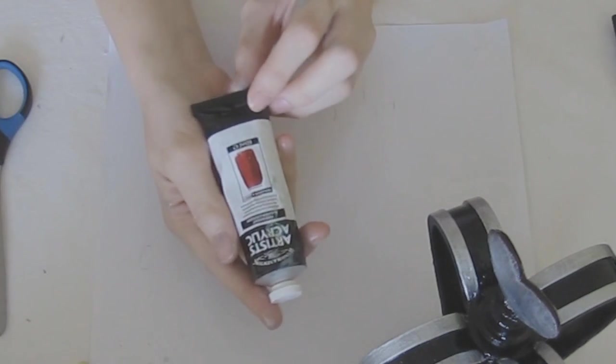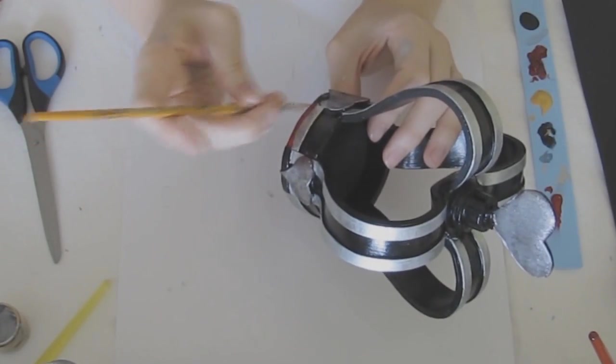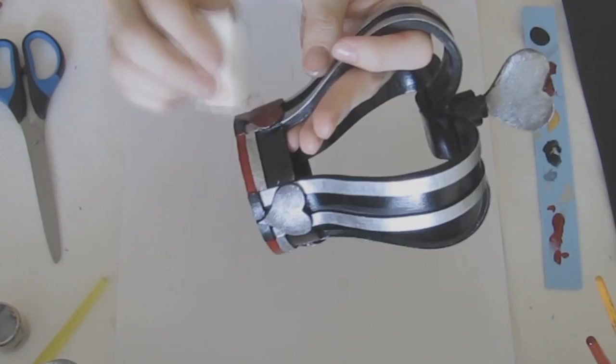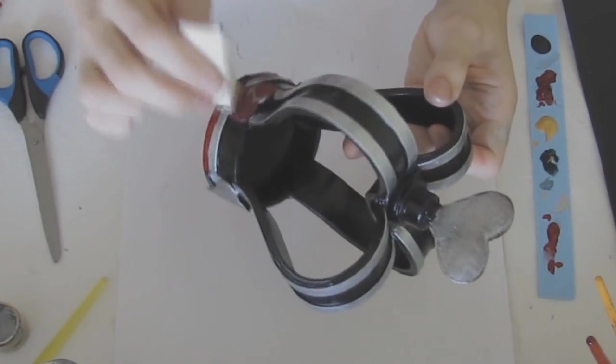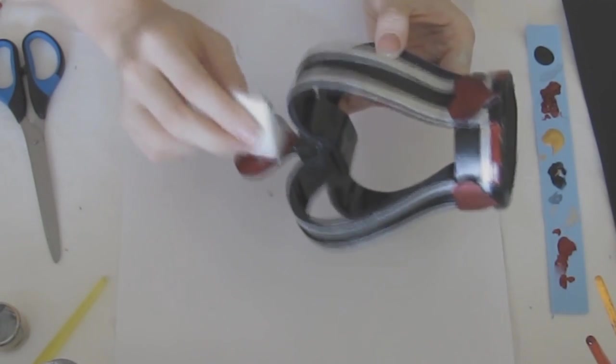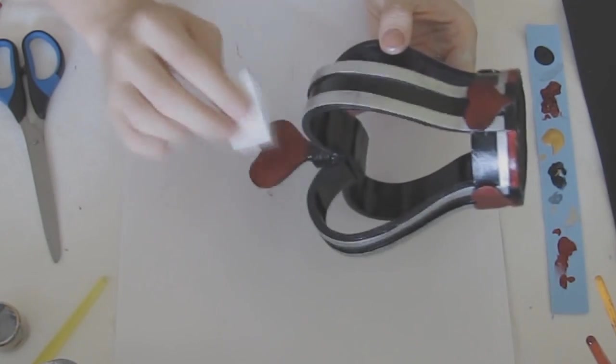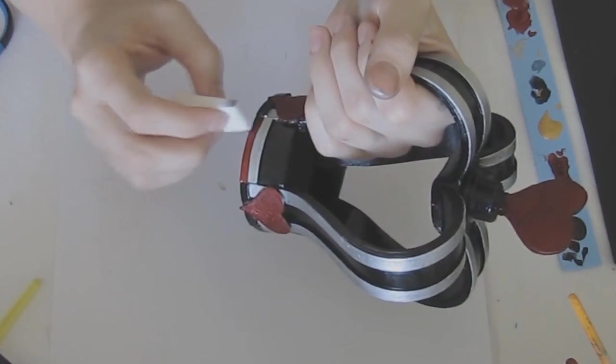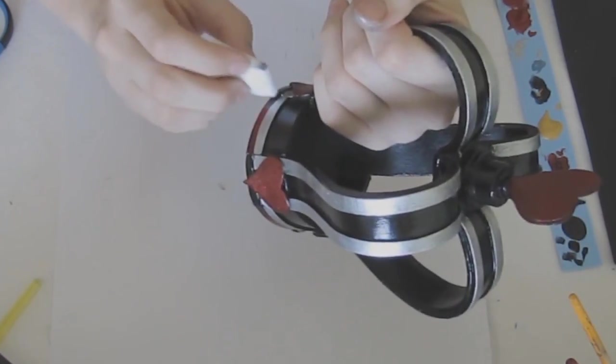I used a Winsor & Newton acrylic paint in Alizarian Crimson but you can use whatever red works for you. Using a makeup sponge I created a bit of a gradient along the hearts and on the bottom with a black acrylic.